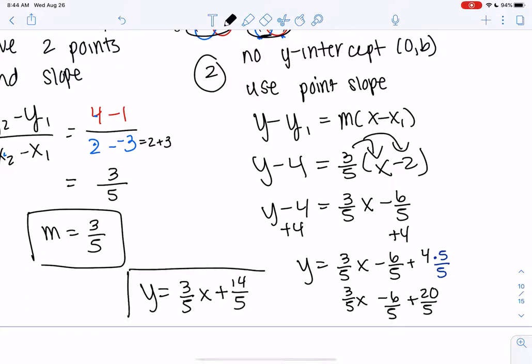So y equals 3 fifths x plus 14 fifths. And we like improper fractions. So leave as improper. Mixed numbers basically don't exist anymore. 14 fifths is improper. And that's the equation of our line. If you try the other point, you will get the exact same equation.